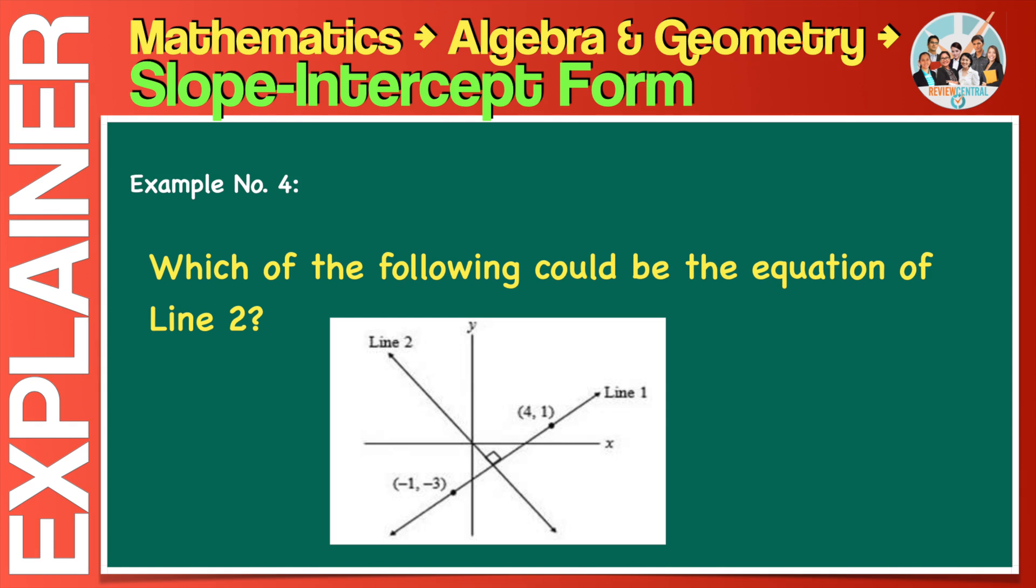The first step in solving this problem is to determine the slope of line 1, which can be quickly done using the two-point form of a line. Just like the slope-intercept form, the two-point form is another standard equation of a straight line. We are covering it in another explainer. After determining the slope of line 1, we can then determine the slope of line 2 through their relationship. And what is that? They are perpendicular, that is.